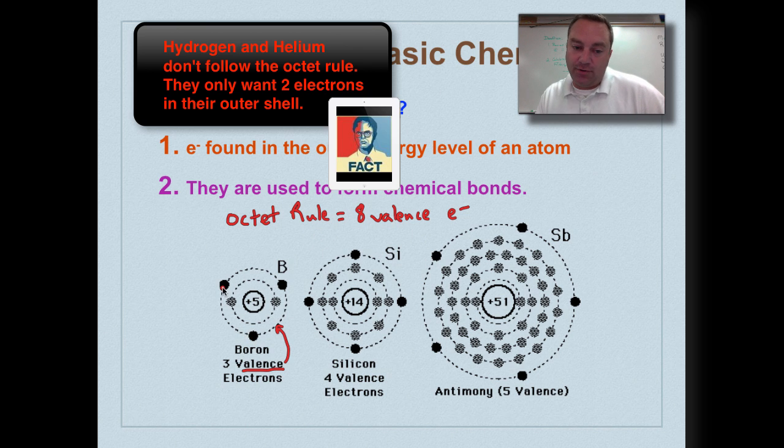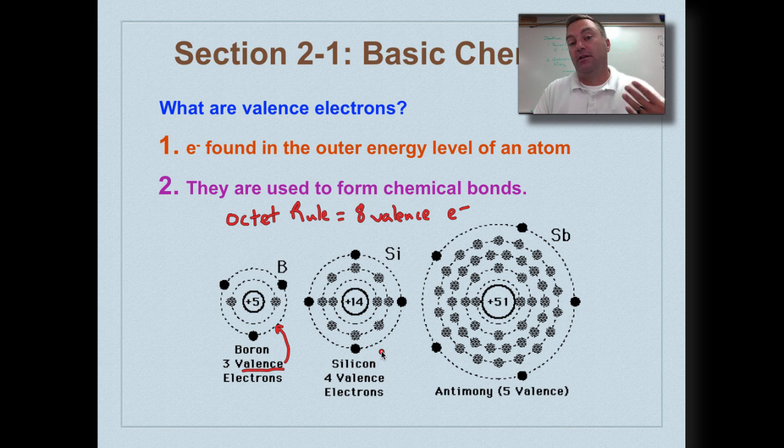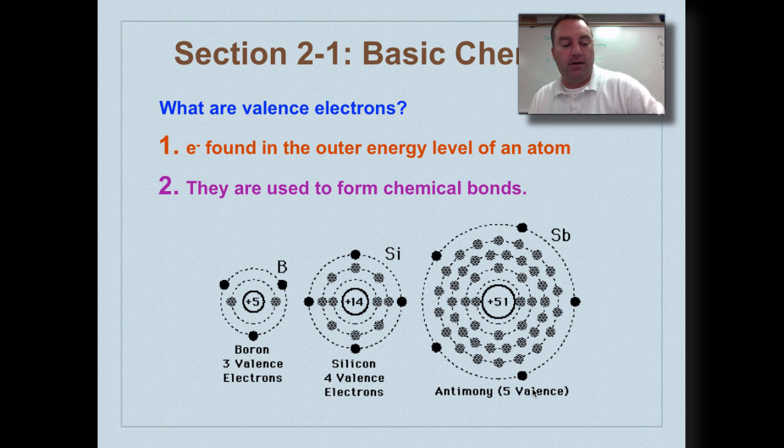And they're going to make chemical bonds in order to fulfill this one. So boron, it has three on the outside. It either wants to gain five or get rid of those three. Silicon needs to find four that it wants to share. In antimony, they want to find three more electrons to create this eight in the outer shell. We'll go over that later in a different podcast.